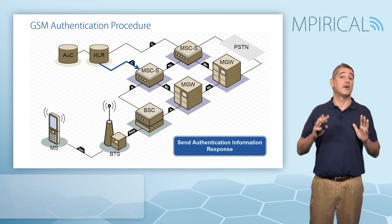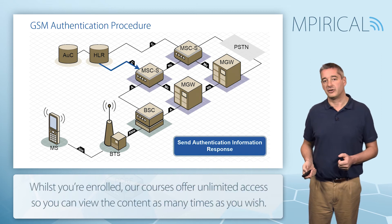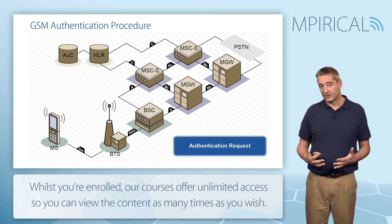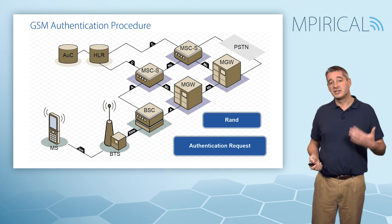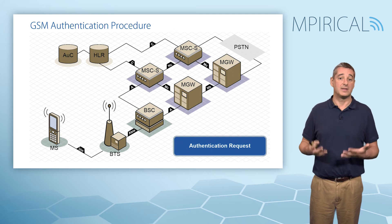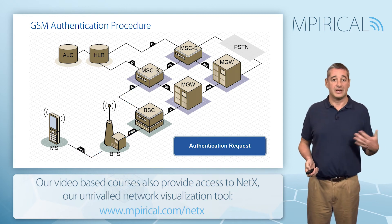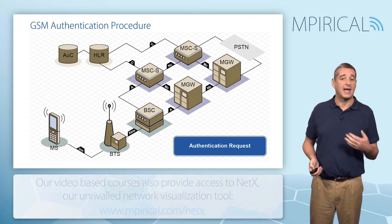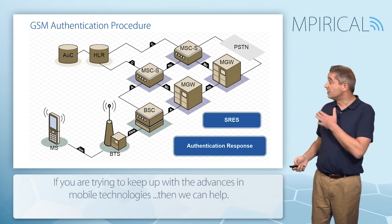We don't typically send down just a single authentication vector to the MSC — we'll send down a number, possibly 3, 5, 7, and so on. When we actually come to authenticate the mobile, the MSC server sends down an Authentication Request message containing the random number, part of our authentication vector. Upon arriving at the mobile, the random number is fed into the SIM card and into the A3 and A8 algorithms along with KI, the authentication key specific to this subscriber. The result is the generation of SRES and Kc values, and the mobile returns an Authentication Response message which includes the SRES.